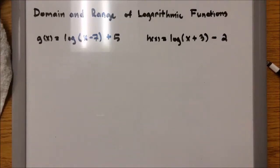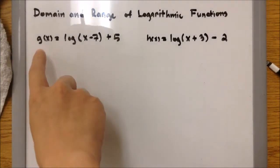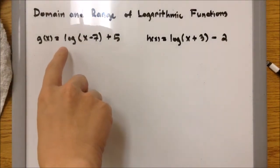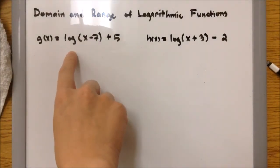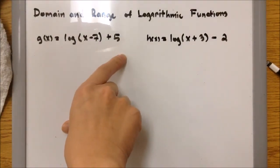Now we're going to talk about how to find and write out domain and range when given logarithmic functions. In our first example, we have g of x equals log of x minus 7, plus 5.